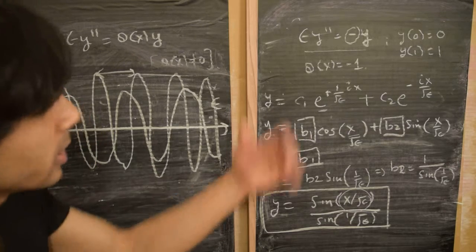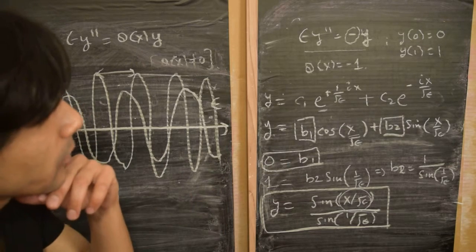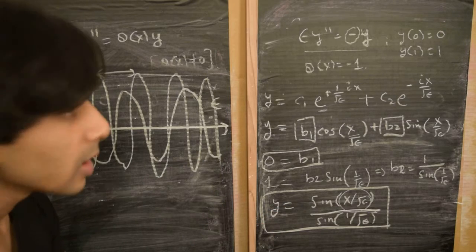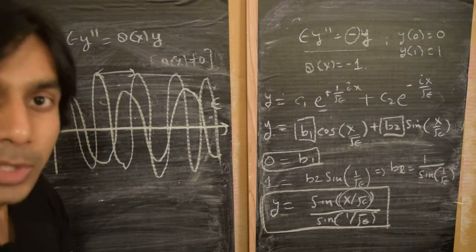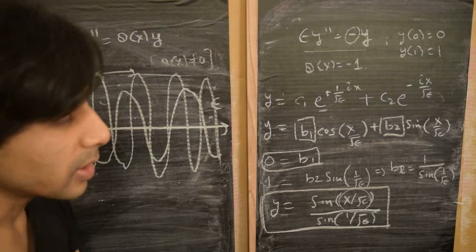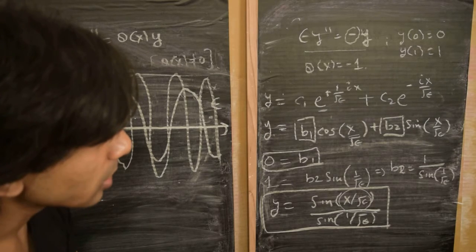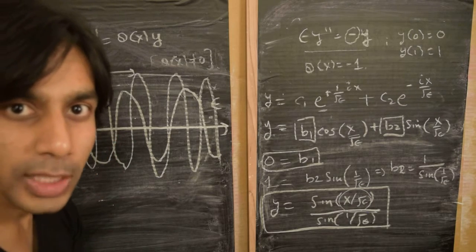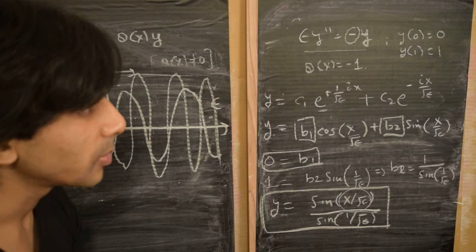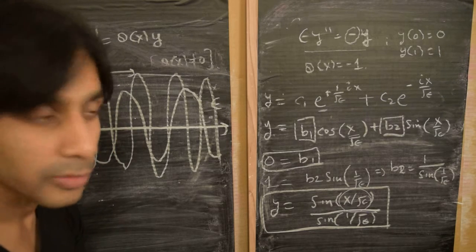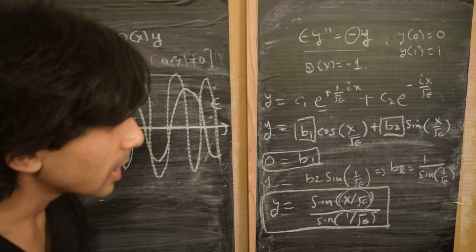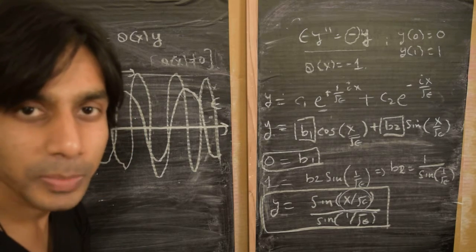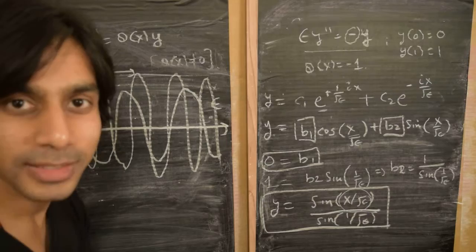This kind of analysis for the WKB method is called a dispersive analysis of a solution, whereas the previous one was the boundary layer phenomenon. I hope this example gives a flavor of both kinds of solutions that WKB can be applied to. Thanks for watching.